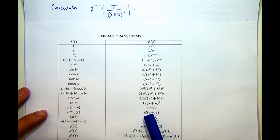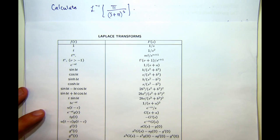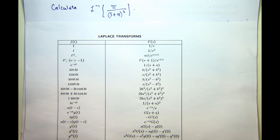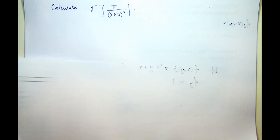The inverse transform of big G of (s+a) is e^(-at) times little g of t. So that's the focus of this particular presentation, is to show you how to use the first shifting theorem to calculate inverse transforms. So how do we do it?